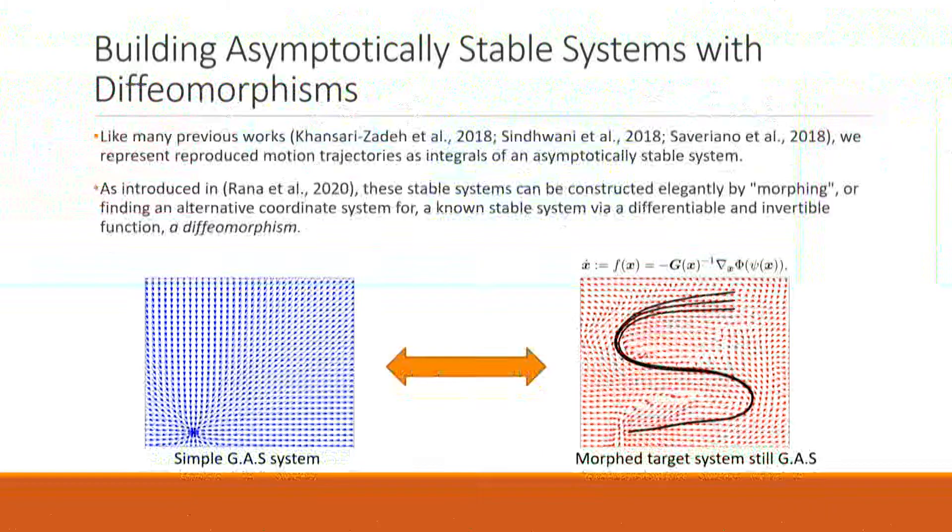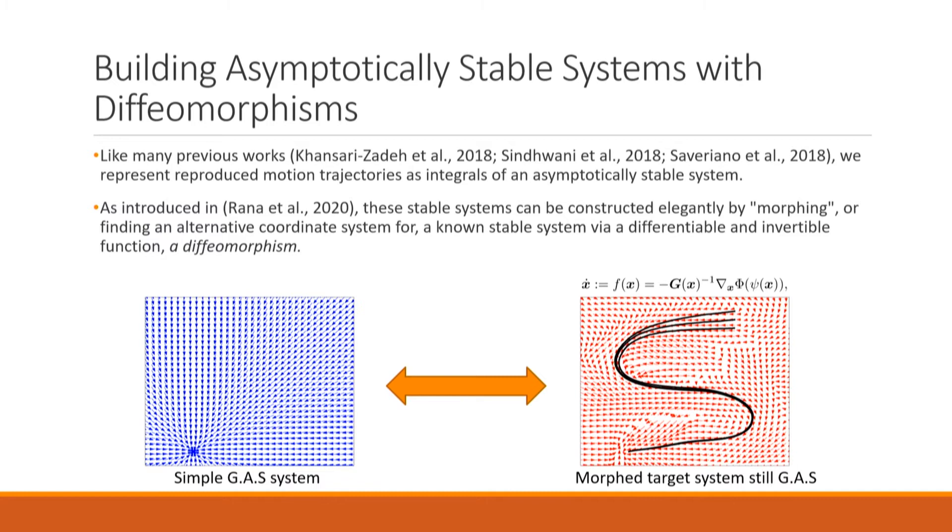Like many other previous works, we represent the reproduced motion trajectories as integrals on some asymptotically stable system. It follows a line of work that has shown that by doing so you're more robust to perturbations.